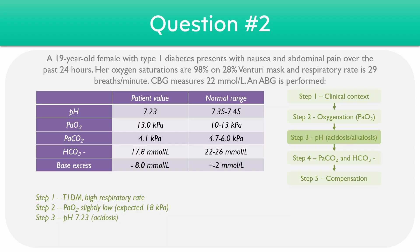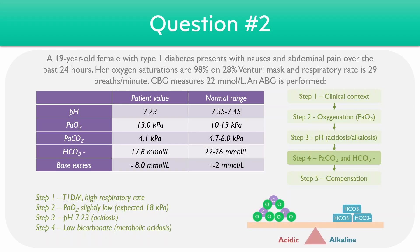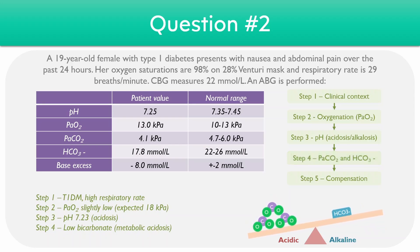For the next step, we can take a look at the pH — in this case it's 7.23, which is quite acidotic. In terms of what's driving this acidosis, we can take a look at the CO2 and bicarbonate levels. The CO2 is 4.1 kilopascals, so it's not a respiratory acidosis — otherwise the CO2 would be higher than normal. But taking a look at the bicarbonate, it's low, so it's more likely to be a metabolic acidosis. On the diagram, the patient has a low bicarbonate, which swings the scale towards the acidic side.